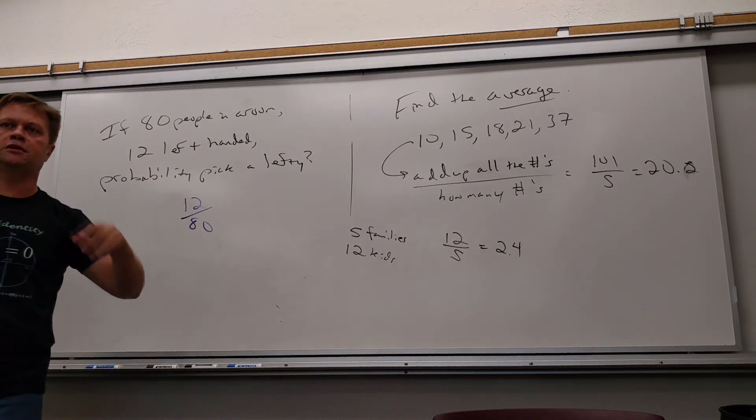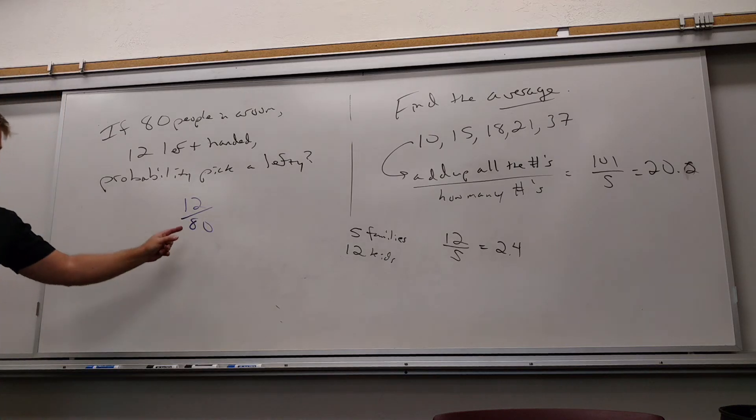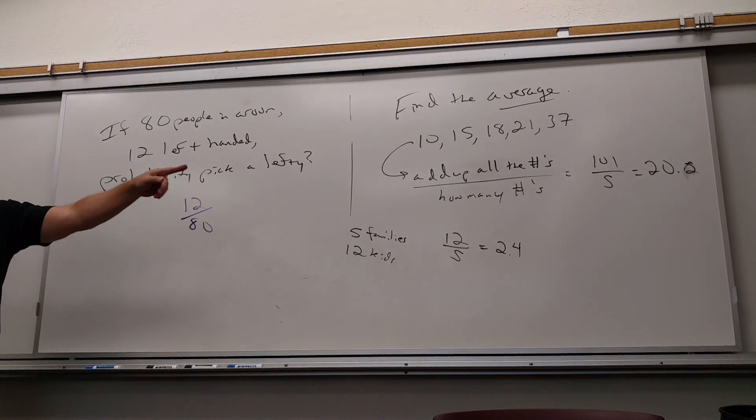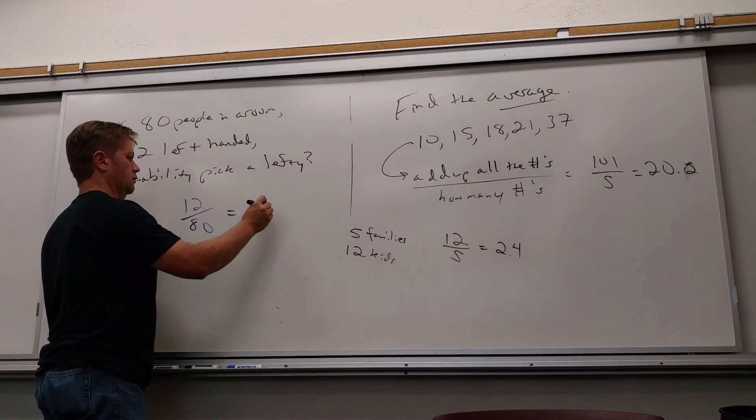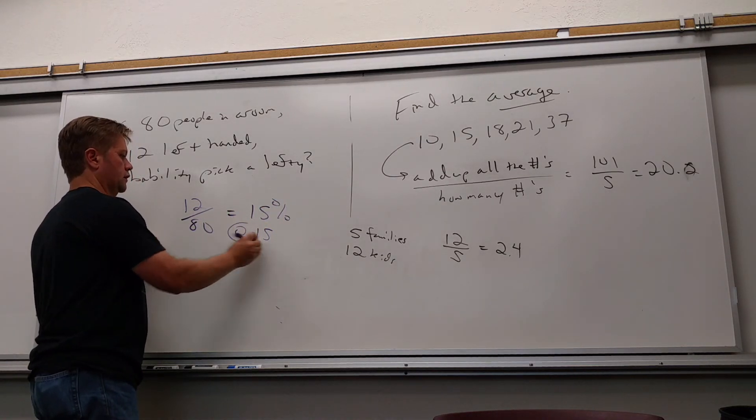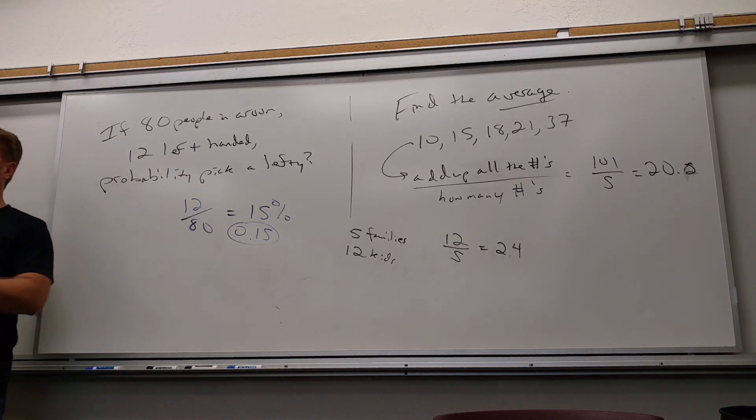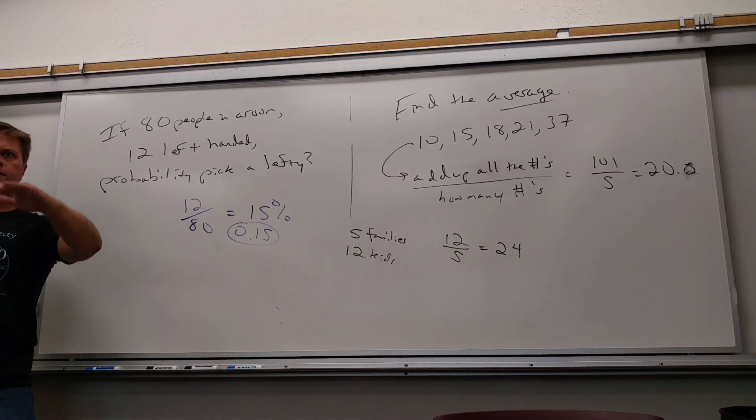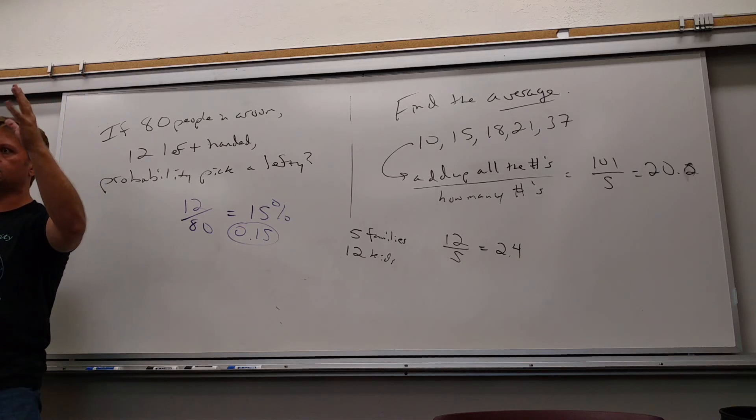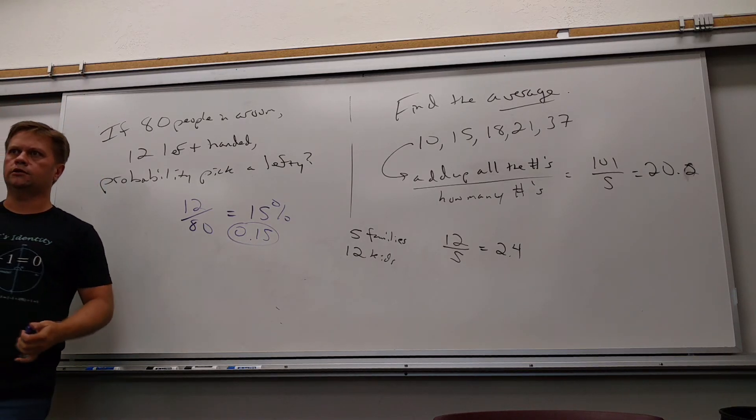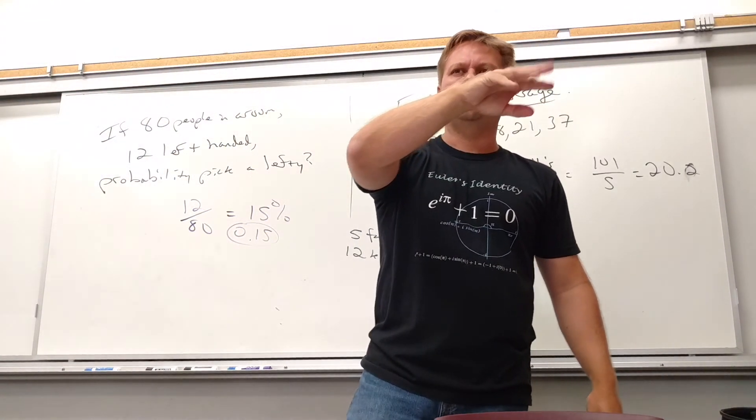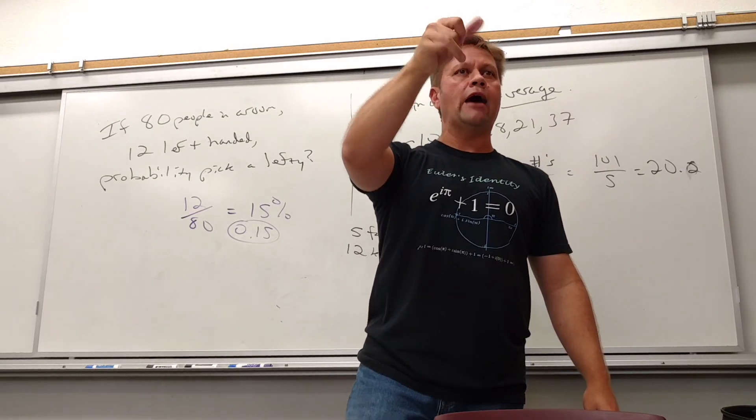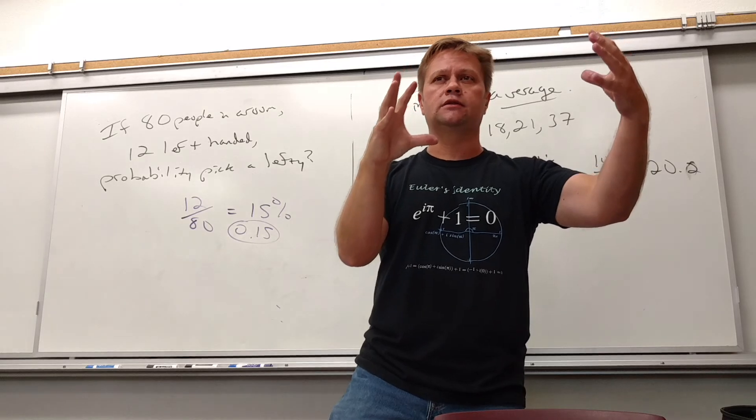So really, probability is the same thing as percentage. If I said what's the percentage of left-handers in the room, you would say the part divided by the whole, 12 divided by 80. I can also say that's the probability. If I could just go and blindfold it and grab somebody, the probability that's a left-hander would be whatever this is. What is 12 divided by 80? 0.15, right? 15 percent. 0.15 as a decimal. So now you see they put some probability stuff in this section because obviously it also will come out to be decimals.